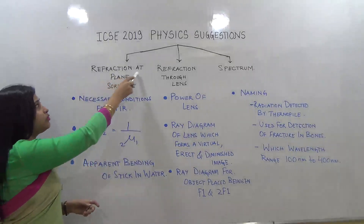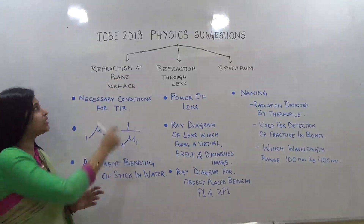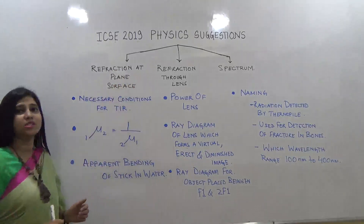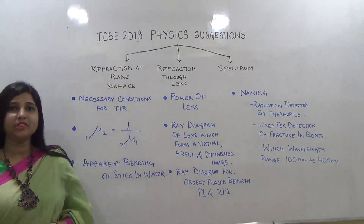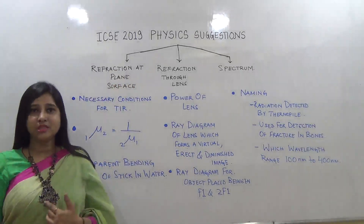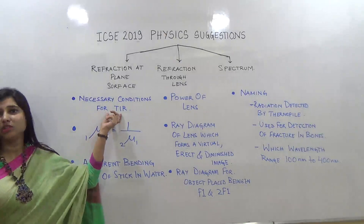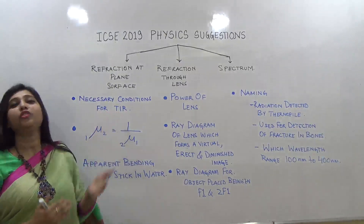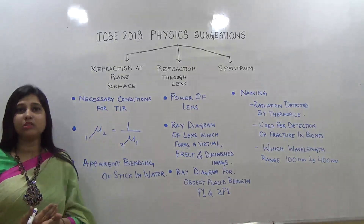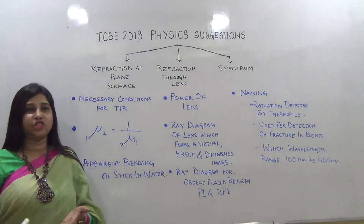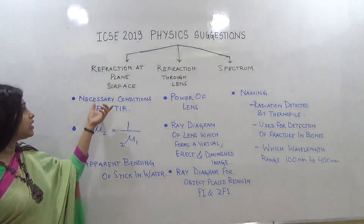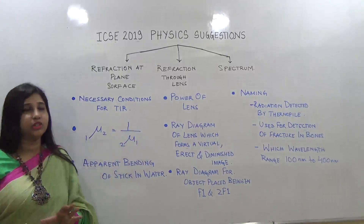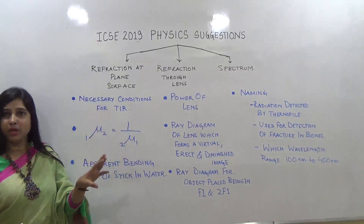Now we move to refraction at plane surfaces. The first important topic is TIR — total internal reflection. The most important question is the conditions necessary for total internal reflection, which may come for three marks.